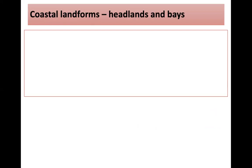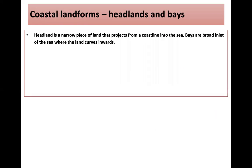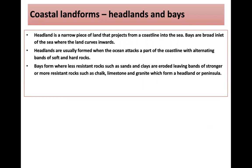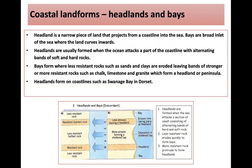All these processes combine to form either erosional or depositional landforms. Headlands and bays: a headland is a narrow piece of land that projects outwards from a coastline into the sea, while bays are broad inlets where the land curves inwards. Headlands form when the ocean attacks a coastline with alternating bands of hard and soft rock. Bays form where less resistant rock like sands and clays are eroded, leaving bands of stronger rock like chalk, limestone and granite to form a headland or peninsula, as seen at Swanage Bay in Dorset.